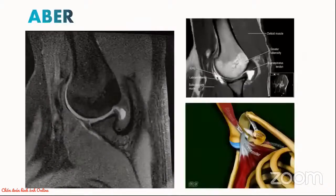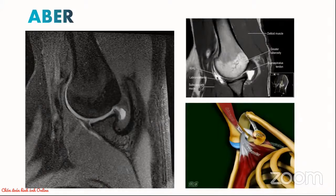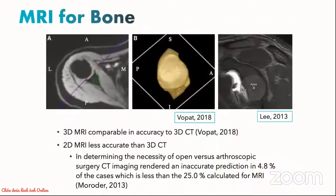When protocoling MRI shoulder for instability, you might also want to consider performing scans in special positions such as the ABER view — abduction and external rotation — which theoretically will put the anterior band of the inferior glenohumeral ligament into tension, thereby optimizing the penetration of contrast material into any tear. A word of caution if you intend to use your MRI to assess the degree of glenoid bone loss: most studies have shown it is slightly less accurate compared to CT, but if you really have to, you might want to try to do a 3D reformat using your MRI images, which will increase the accuracy.